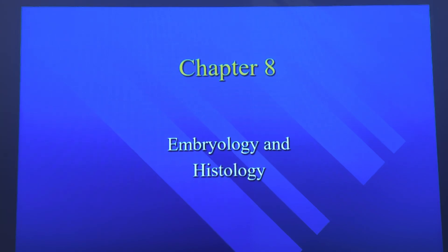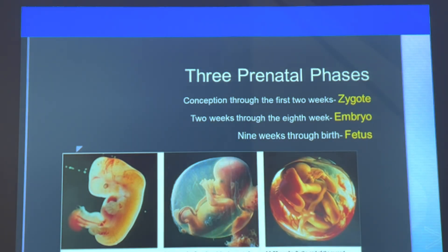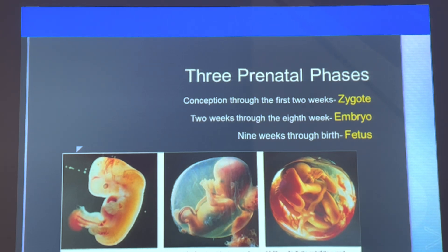Chapter 8, Embryology and Histology. We're going to look at the three prenatal phases. Conception through the first two weeks is the zygote. Two weeks through the eighth week is the embryo. Nine weeks through birth is the fetus.